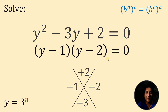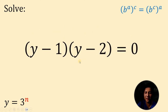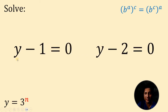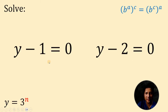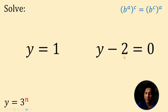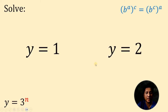Now let's focus on this factored form. Since it is equal to 0, we can say that at least one of them must be equal to 0. So we have y minus 1 equals 0 or y minus 2 equals 0. On the first case, if we add 1 on both sides, we get that the value of y must be equal to 1. And on case number 2, if we add 2 on both sides, we get that the value of y must be equal to 2.